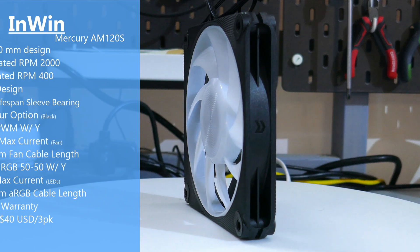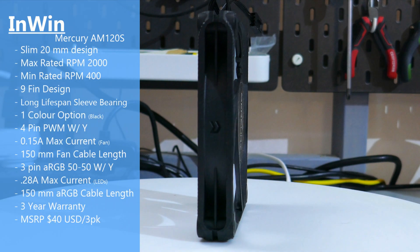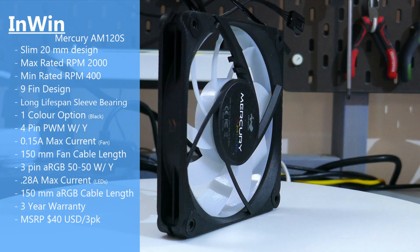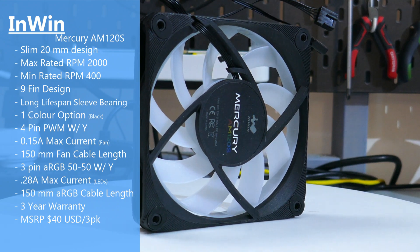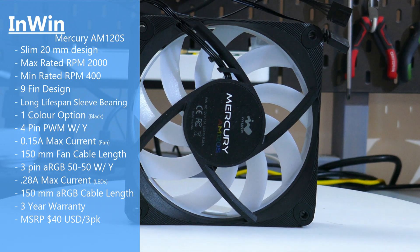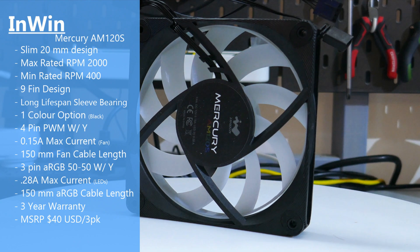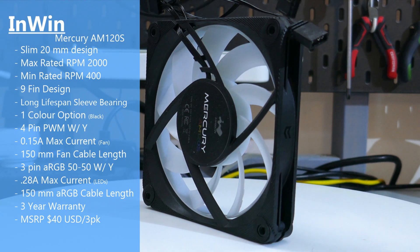Let's start off with a quick overview of the fan. So this is a slim fan or slimmer fan with a 20 millimeter depth. It has a max rated RPM of 2000, a minimum rated RPM of 400.